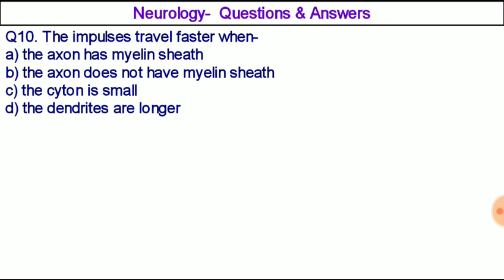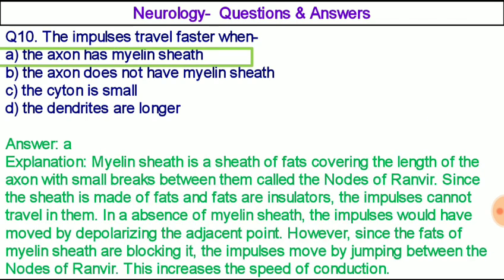Question number ten: Impulses travel faster when — option A: the axon has a myelin sheath, option B: the axon does not have a myelin sheath, option C: the cytone is small, option D: dendrites are longer. The correct answer is option A. The myelin sheath is a layer of fat covering the axon with small breaks called nodes of Ranvier. Since fats are insulators, impulses jump between nodes of Ranvier — this saltatory conduction increases the speed of transmission.